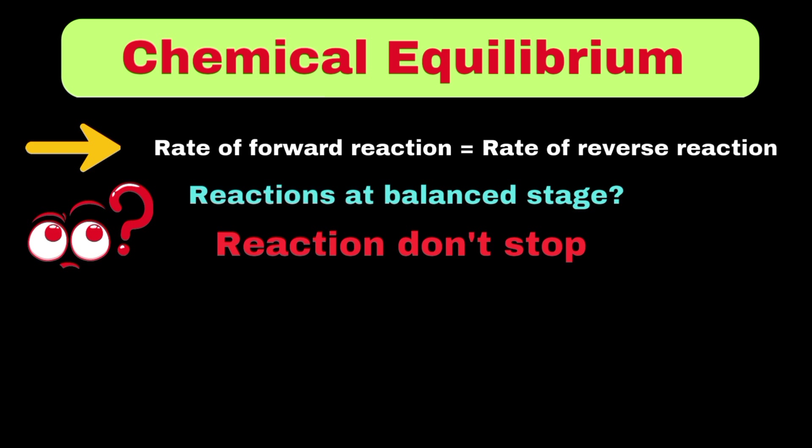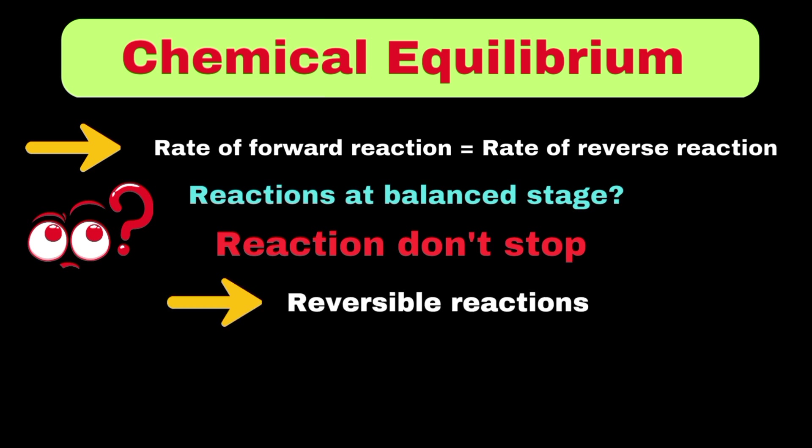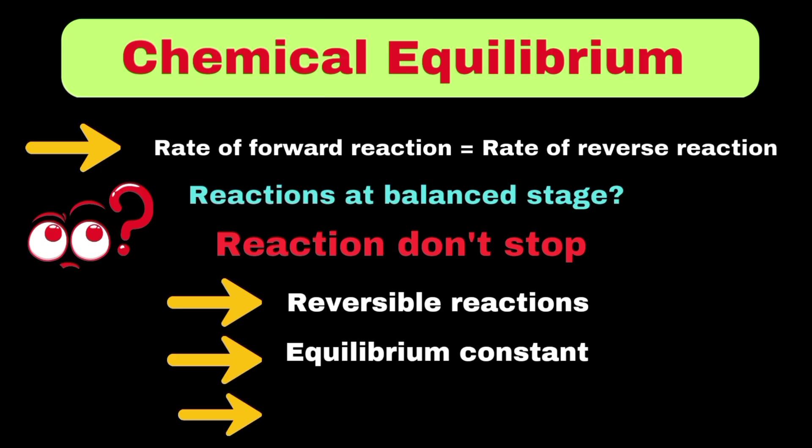Chemical equilibrium can be understood through several fundamental concepts: reversible reactions, equilibrium constants, and Le Chatelier's principle. Let's explain each concept in detail.